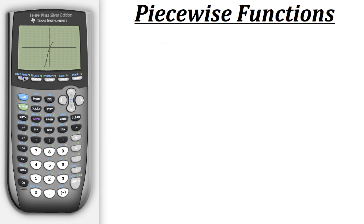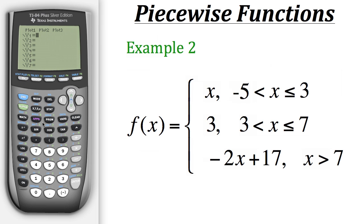Now let's try one more example. This time, we have a piecewise function with compounded conditional statements. For example, with our first part of the piecewise function, where f of x will equal x, it has a compounded condition of x being greater than negative 5, but less than or equal to 3.